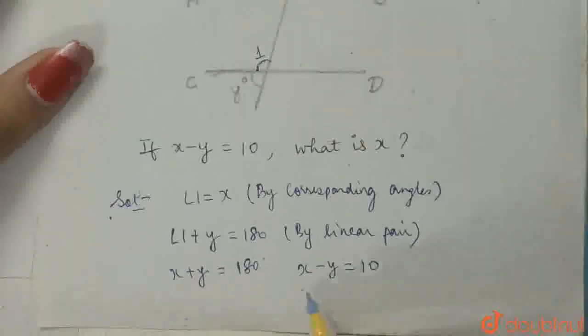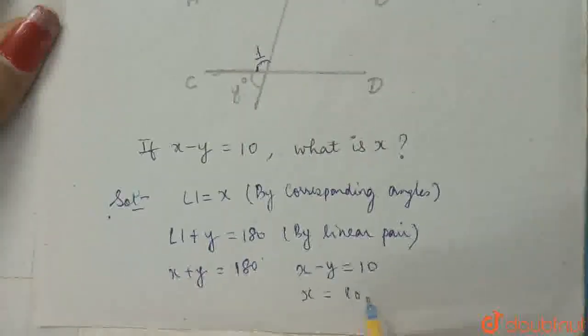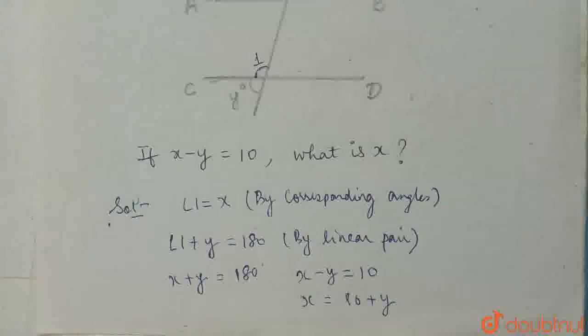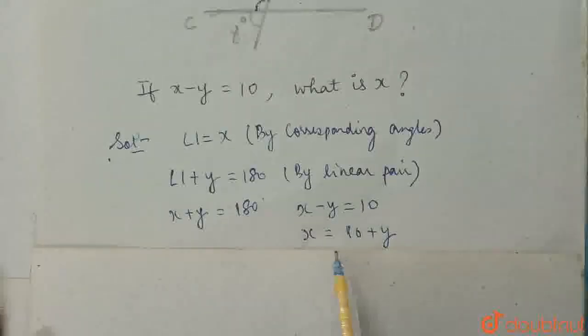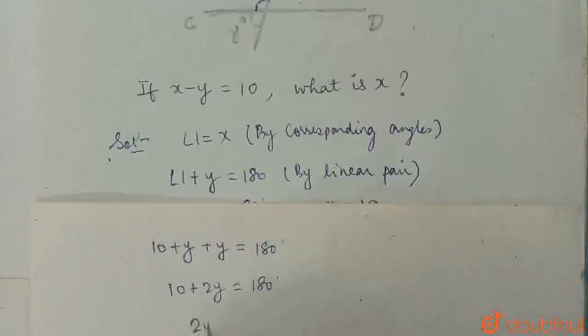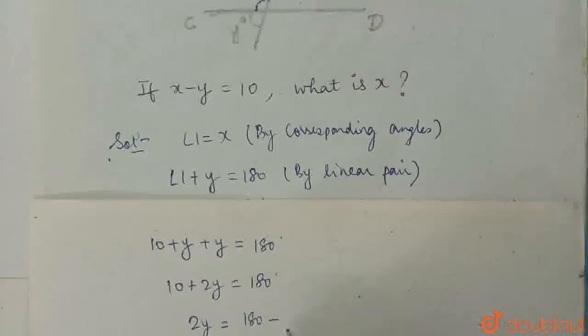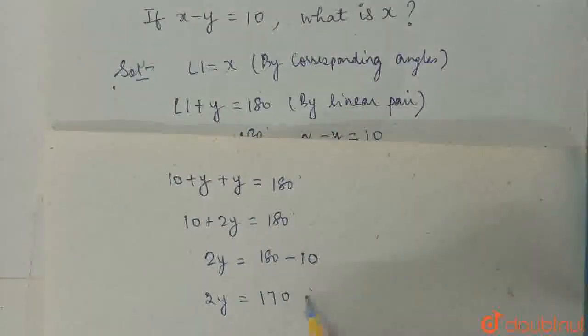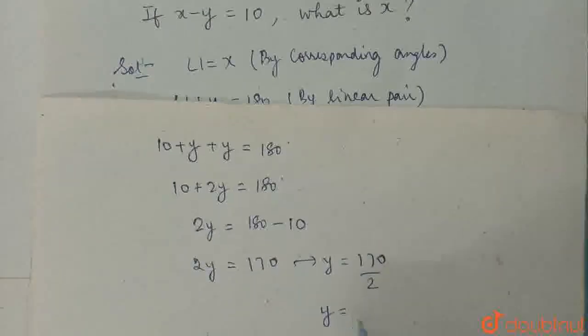From here, x can be written as 10 plus y, and putting the value of x in this equation, we can find the value of x. Putting this value of x here, we get 10 plus y plus y is equal to 180. This becomes 10 plus 2y is equal to 180 degrees, which becomes 2y is equal to 180 minus 10. This becomes 2y is equal to 170, so y will become 170 upon 2, which is equal to y is equal to 85.